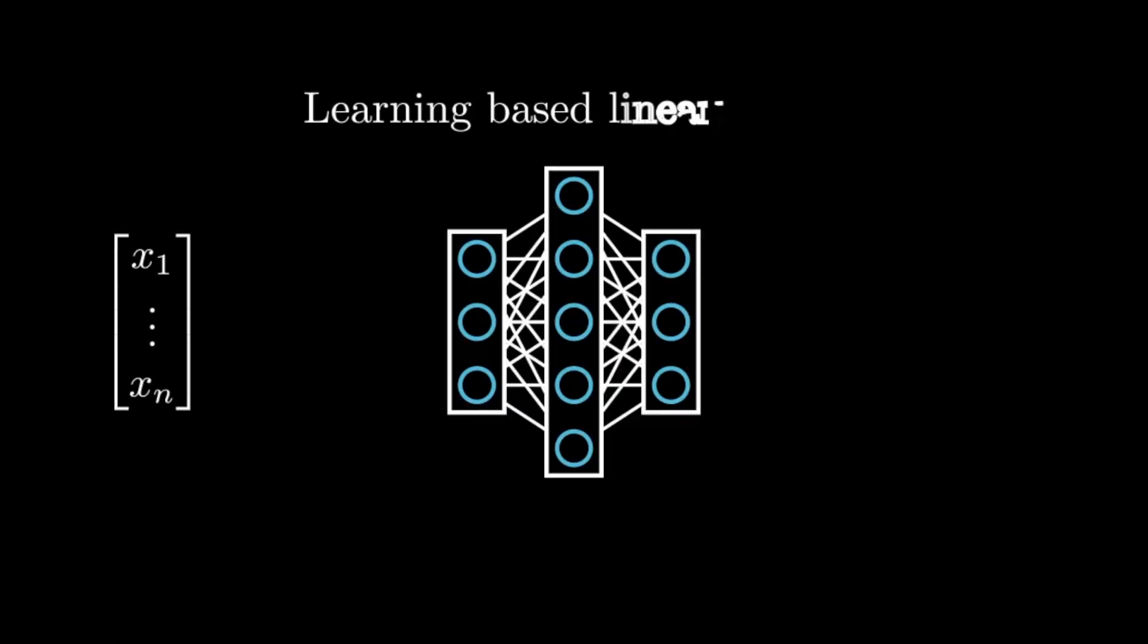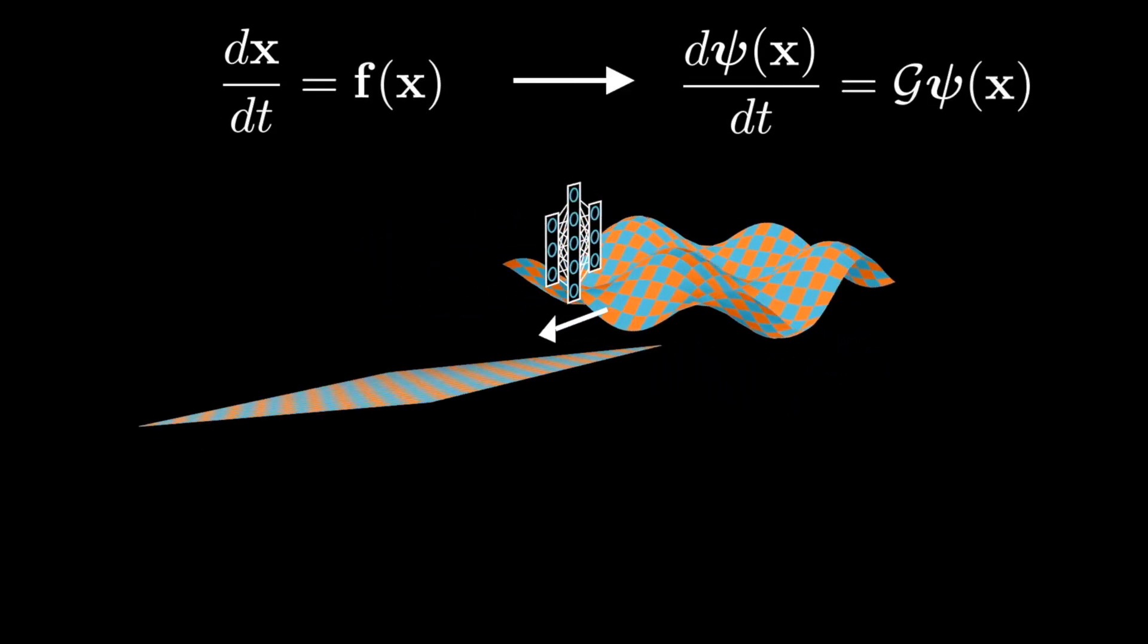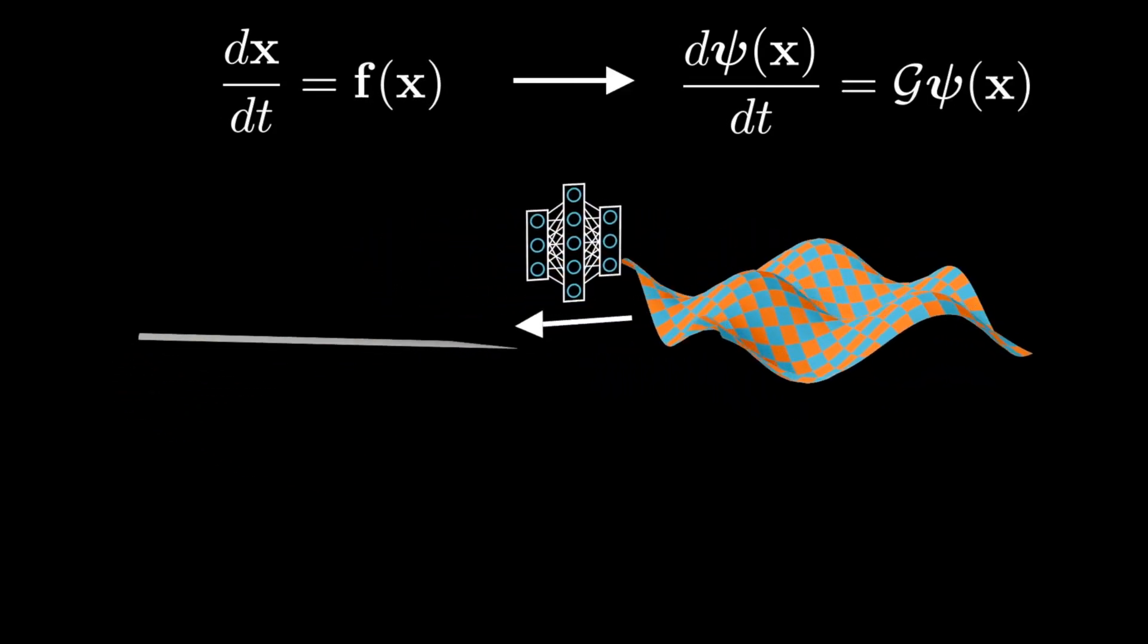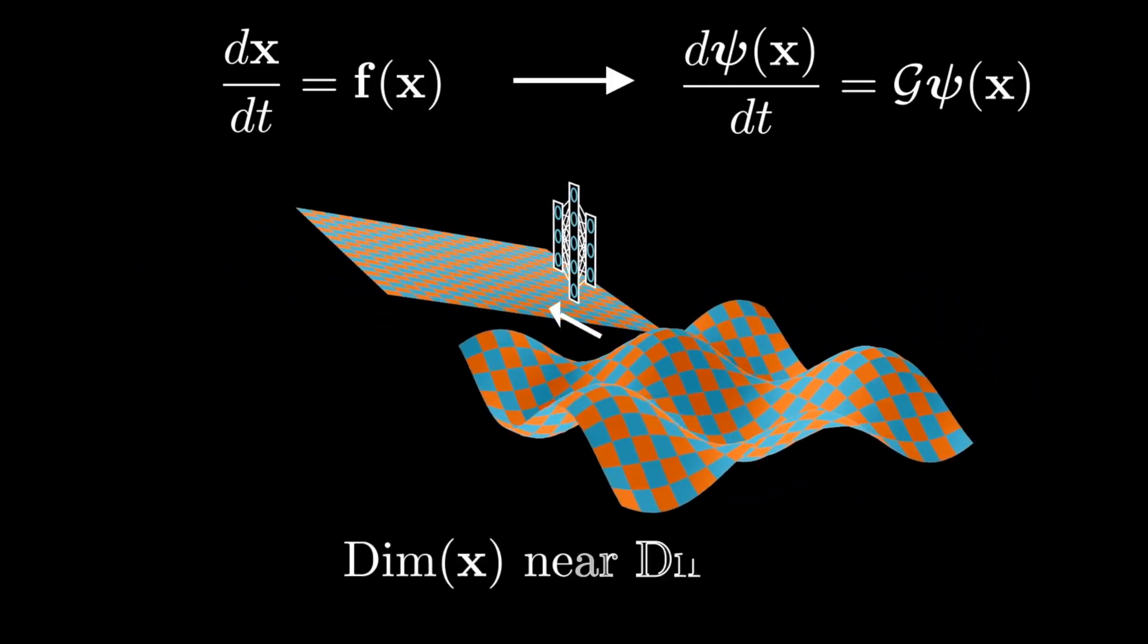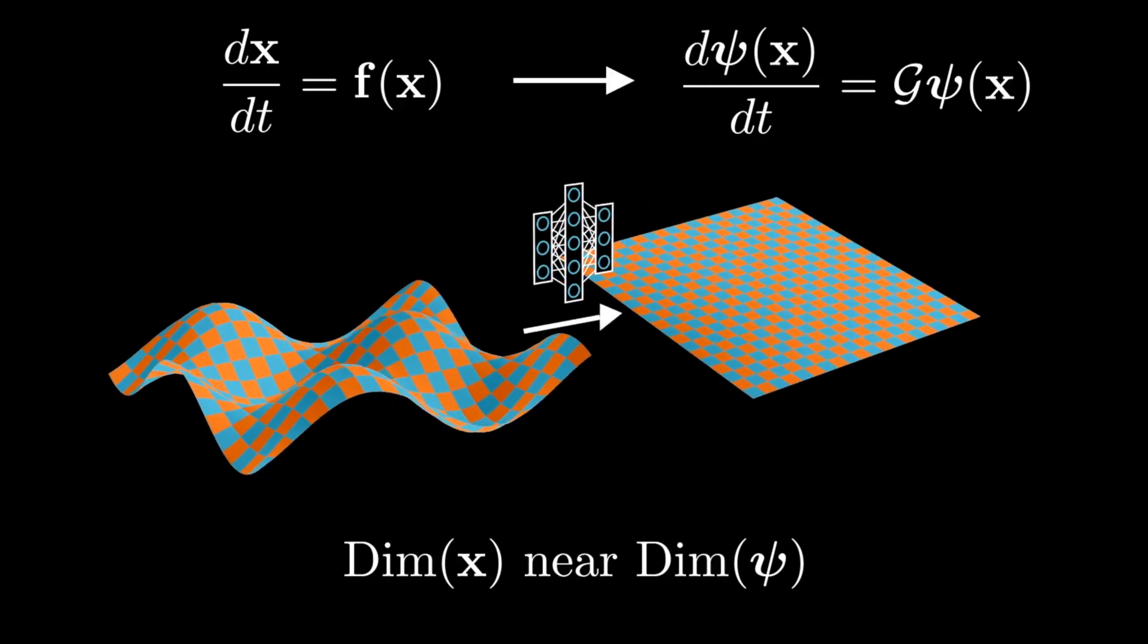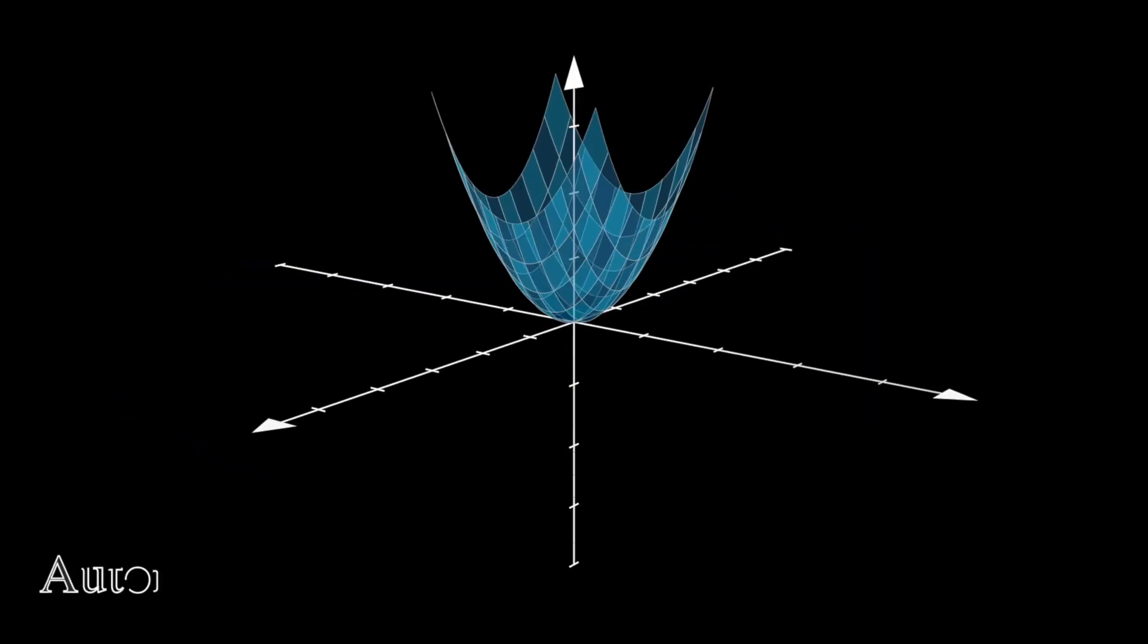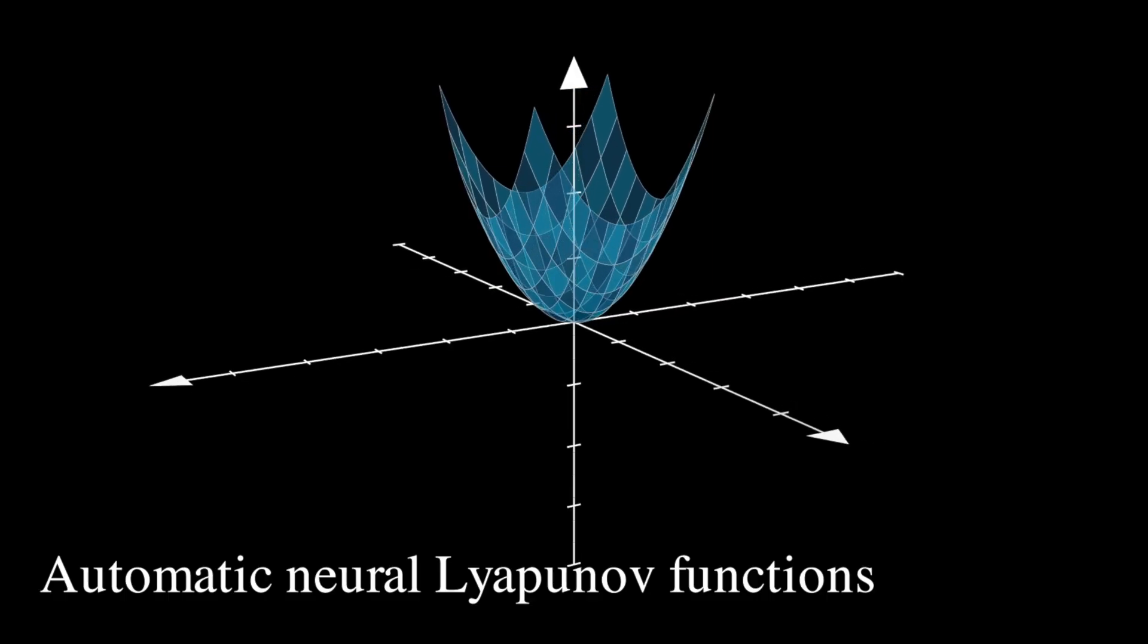Our work tackles these challenges with a learning-based framework that can find a model directly from data. This method creates a globally linear model for nonlinear dynamics capable of making long-term predictions. The dimensionality of the new model is near to or sometimes lower than the original state dimension, offering a method for model order reduction. Additionally, the new coordinates have a mathematical structure that can be easily used to interpret the dynamics and exploit defined Lyapunov functions that automatically describe the behavior of the system.